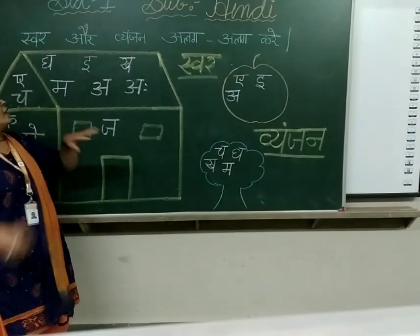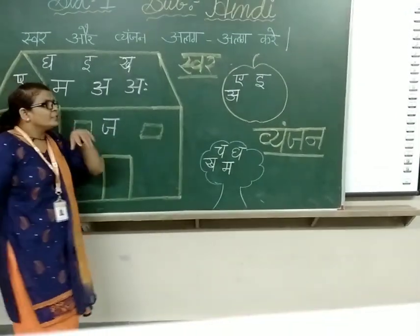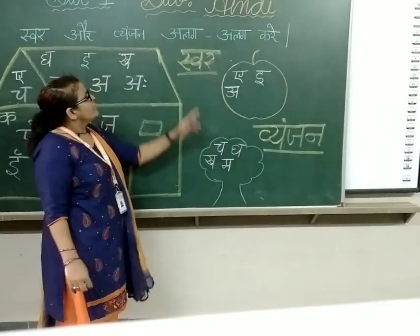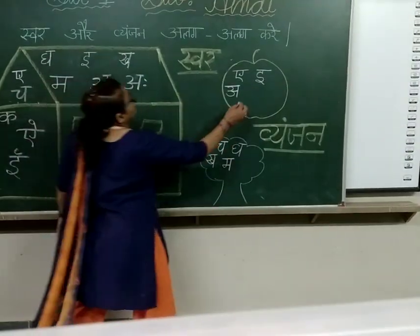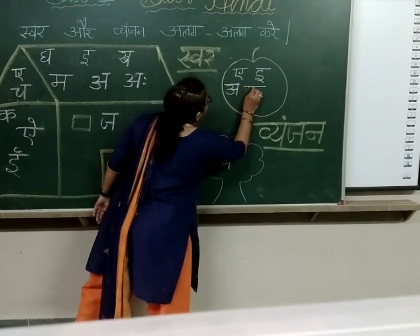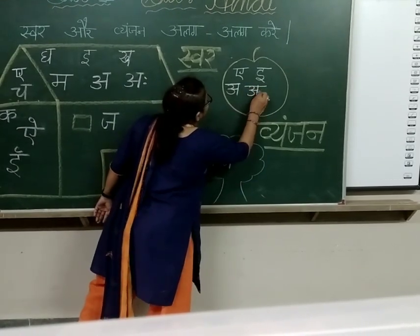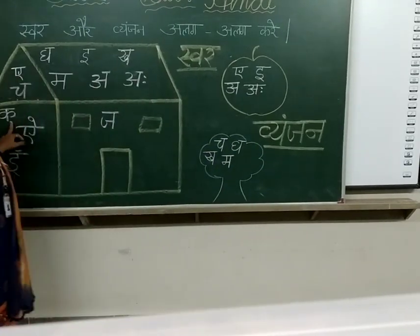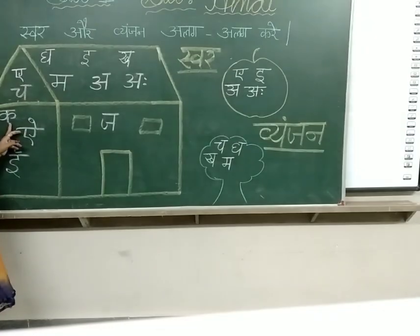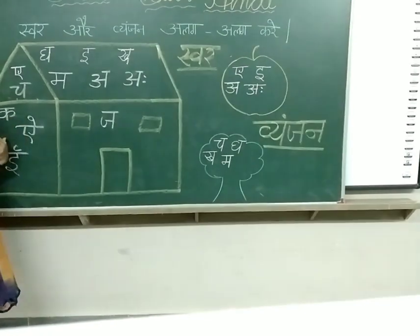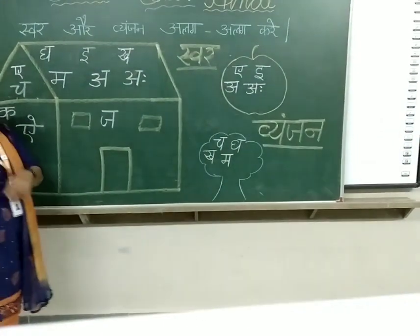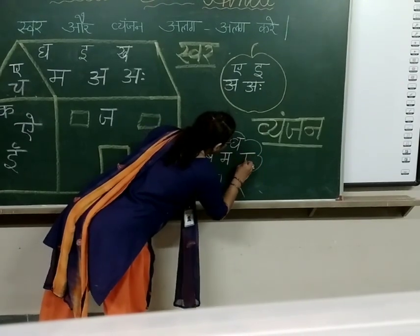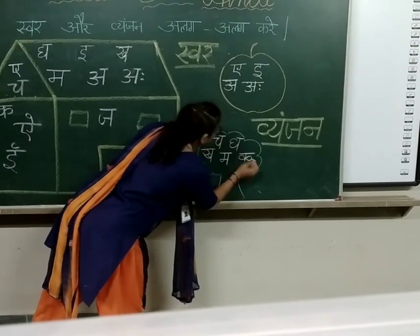Now अ खाली — अ खाली kis mein aata hai? Swar mein ya Vyanjan mein? Swar mein. To hama is ko likhenge save mein. अ खाली. Then after क से कबूतर — क से कबूतर kis mein aata hai? Vyanjan. So Vyanjan ko vriksh mein likhenge. क से कबूतर.